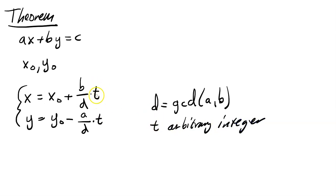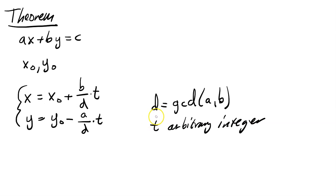Depending on what we choose t to be, we get different solutions. Since t can be any integer, we have infinitely many solutions. To use this in practice, we first need to find one solution and calculate the greatest common divisor. We use Euclid's algorithm to find the GCD, and finding one solution also involves running Euclid's algorithm.